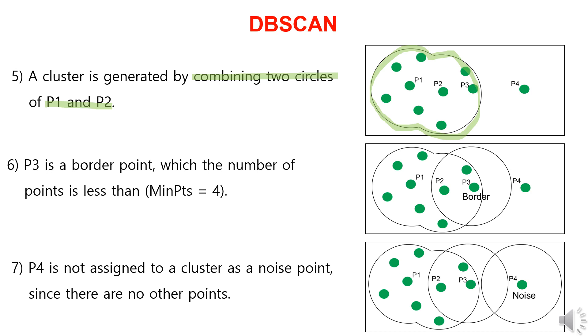For P3, there are only three data points within its radius, making it a border point. As for P4, since there are no other data points within its radius, it is considered noise. By following this process, we complete the cluster formation.